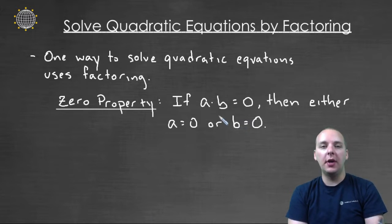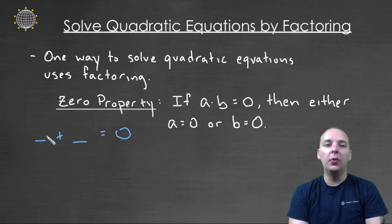And this isn't always true with every operation. For example, if you had addition, there's a way you could add two numbers to get zero where neither one of them are zero. Maybe like negative five and five, they add to zero.